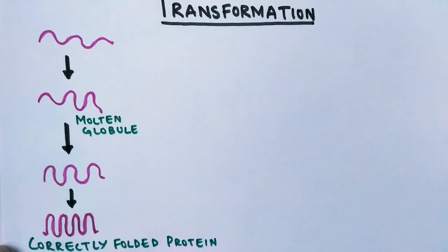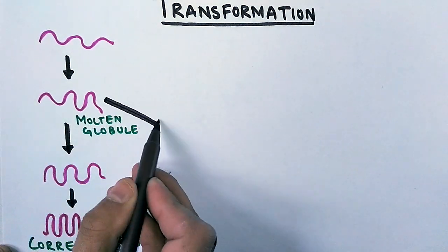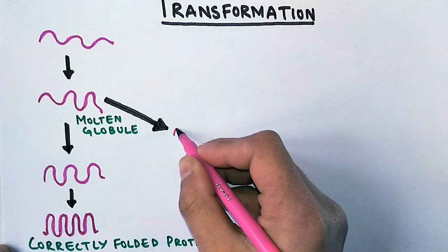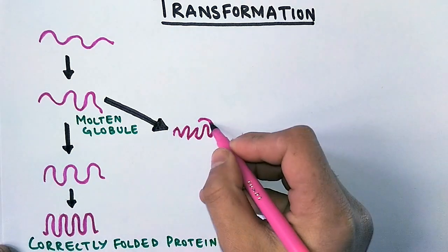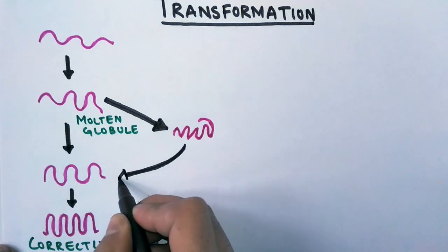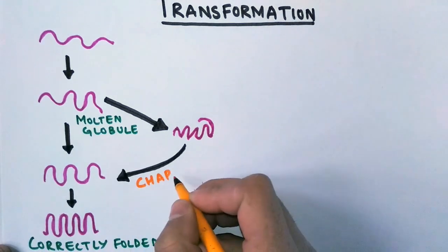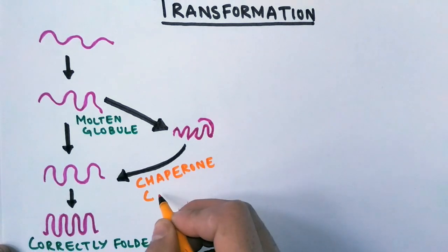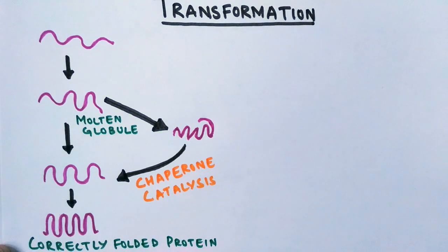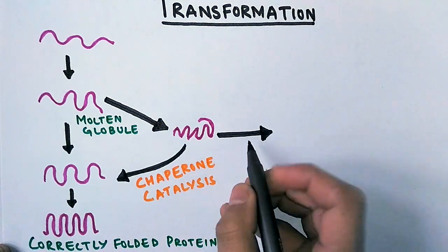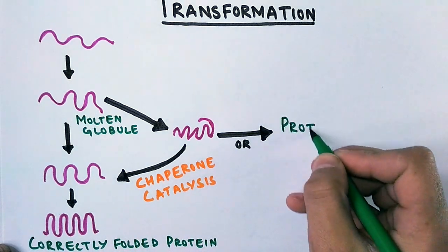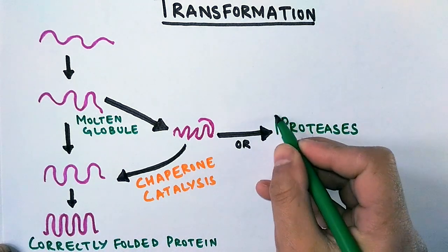But during protein folding there are some errors, proteins get misshaped, and then these misfolded proteins are sent for repairing. This repairing is done by chaperone molecules, and these chaperone molecules catalyze the misfolded protein and get it corrected to the original form. But if the misfolded protein does not get corrected, it's sent for proteolysis and is degraded.